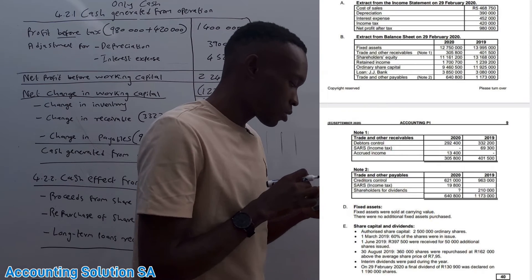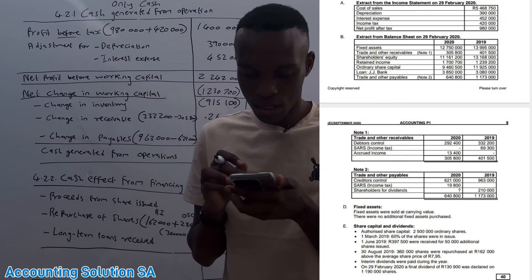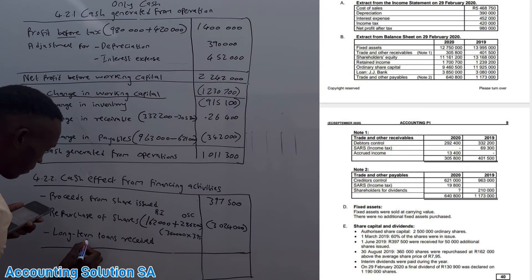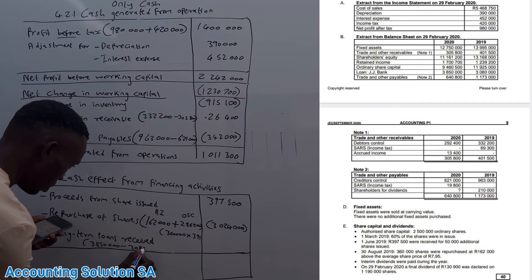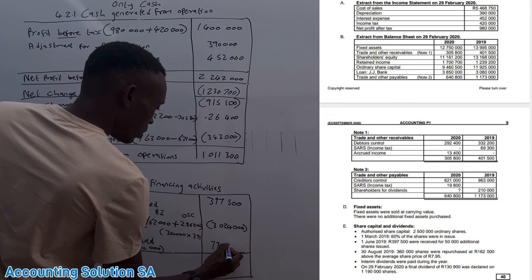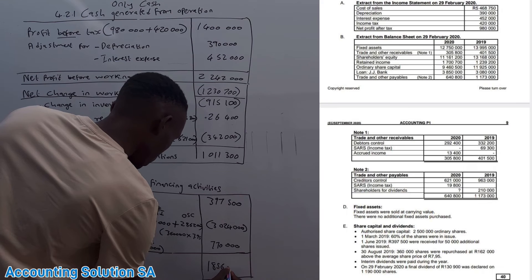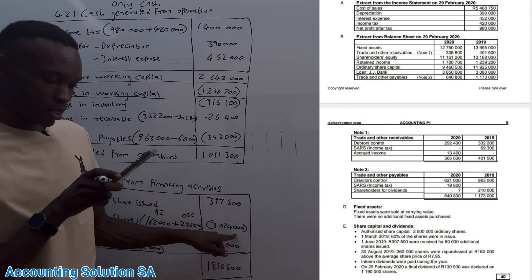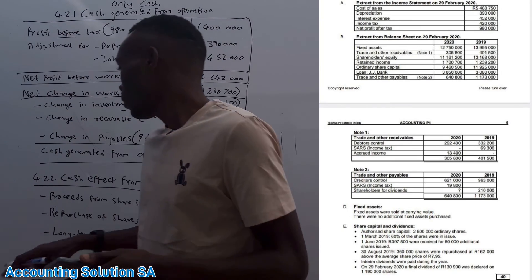For the long-term loan, we compare last year's and this year's balances. Last year was 3,080,000 and this year is 3,850,000, meaning we went to the bank and borrowed again — this is an inflow. 3,850,000 minus 3,080,000 gives 770,000, which is positive. After adding all financing activity items and subtracting where applicable, the net result is negative — it's an outflow.